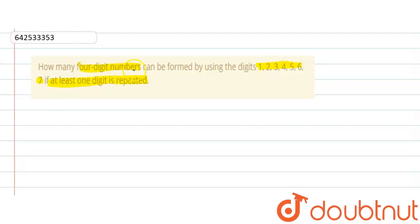So for 4 digit numbers, how many places we have? 1, 2, 3, 4. So from 1, 2, 3, 4, 5, 6, 7, we have to form a 4 digit number.